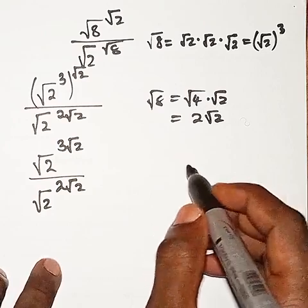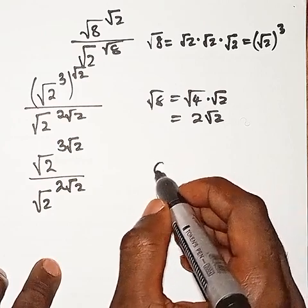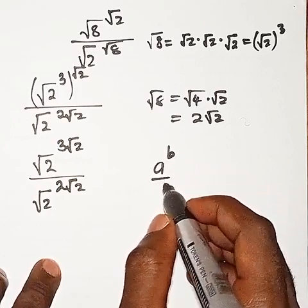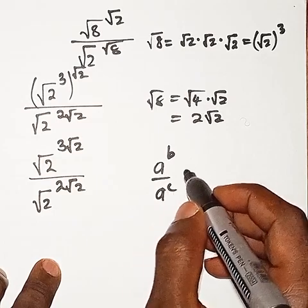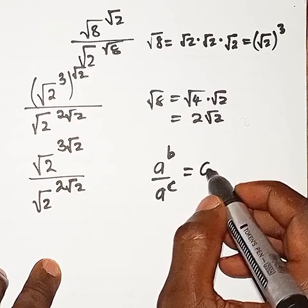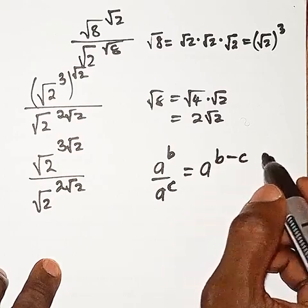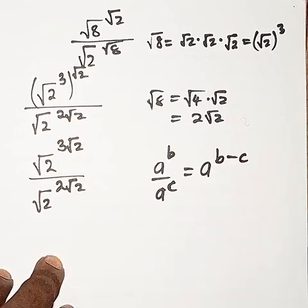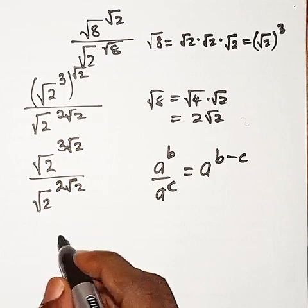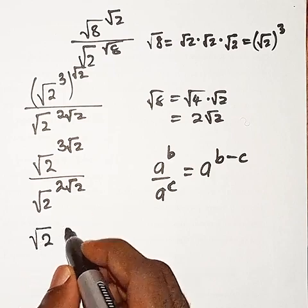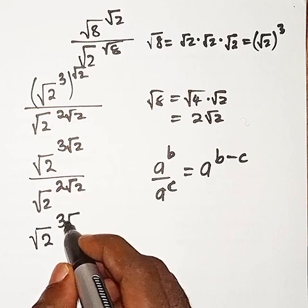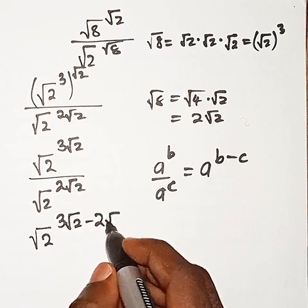Now, from the law of indices that say when you have a to power b, then divide by a to power c, this is going to be a to power b minus c. So we are going to apply that here. We are going to have root 2, this is 3 root 2 minus 2 root 2.